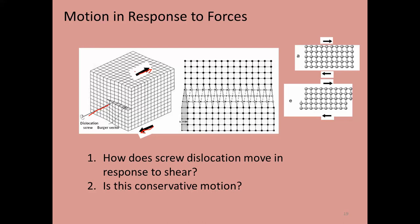The macroscopic picture is that the top part wants to be displaced back to the left relative to the bottom part. One way this can happen is if this lip extends all the way over here.